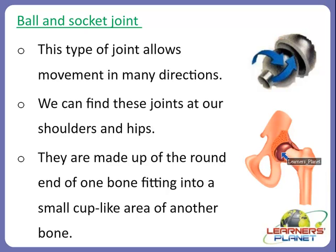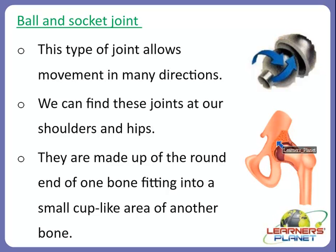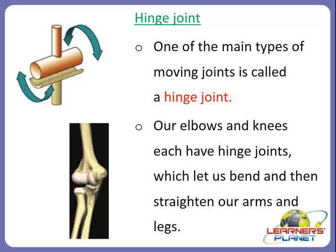The ball and socket joint is made up of a round end of one bone fitting into a small cup-like area of another bone. The round bone acts like a ball, and the cup-like area acts as a socket. It lets us bend and straighten our arms and legs and allows movement in many directions — that is why it is called the ball and socket joint.